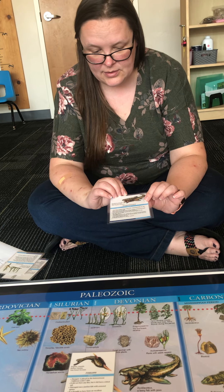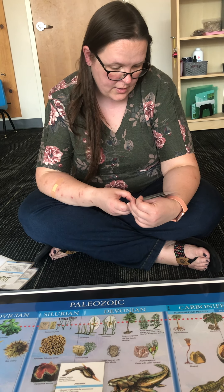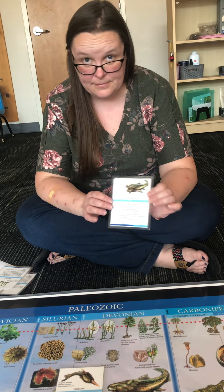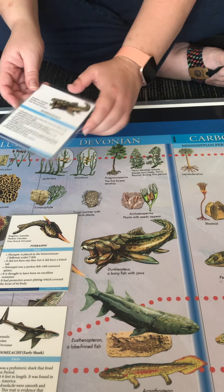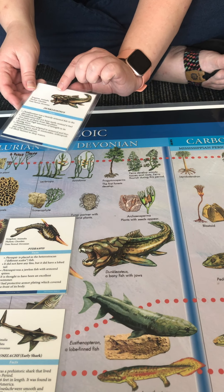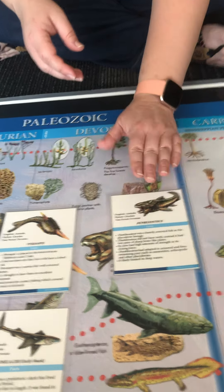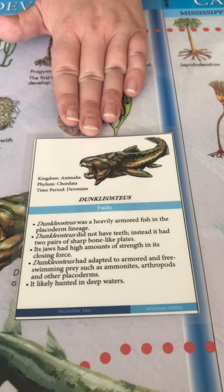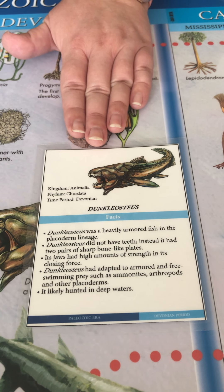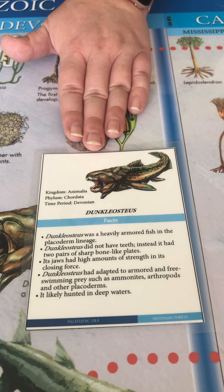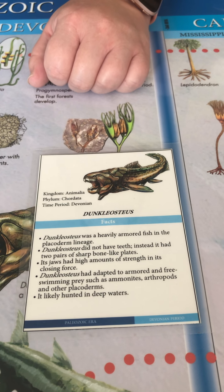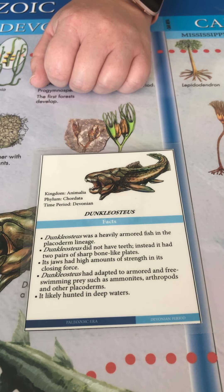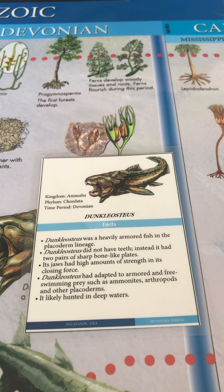This is the Dunkleosteus — it was so huge, and you might have even seen fossils of this in museums because it's just so impressive. It was a placoderm, and it didn't actually have teeth. Instead, it had two pairs of sharp bone-like plates.